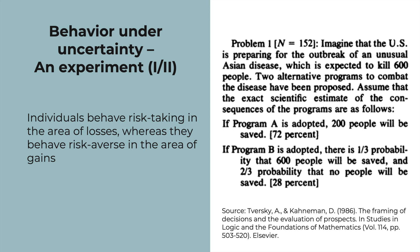In this decision problem, the majority of respondents chose the safer option, namely Program A. Saving 200 people for sure is more attractive than the riskier option of equal expected value. Although there is a one-third chance of saving 400 more people, the students were risk-averse in this framing.